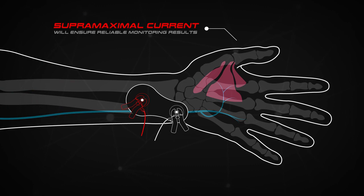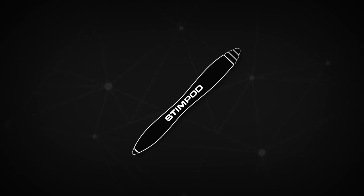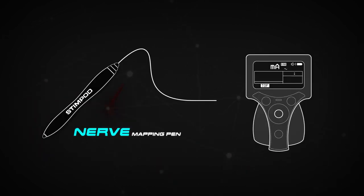In order to avoid any anatomical anomalies as well as ensure correct electrode placement, we recommend utilizing the Stimpod nerve mapping pen to locate the most superficial nerve site.